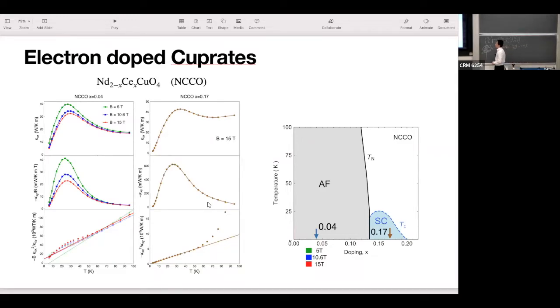We also have electron-doped cuprites. This is at two different dopings. At 4%, it's still in the antiferromagnetic phase. At 17%, it's a superconducting phase. But when you put the strong field, it's suppressed. In these two cases, you don't get perfect linear relation between 0 and 100K. But you get linear relation in some temperature regimes. It seems that this linear relation is pretty general. We find it in parent compounds in hole-doped cuprites and electron-doped cuprites.